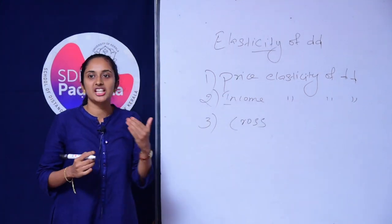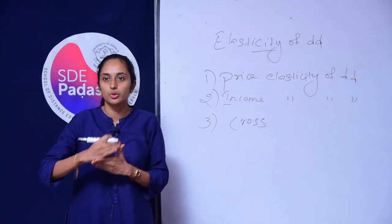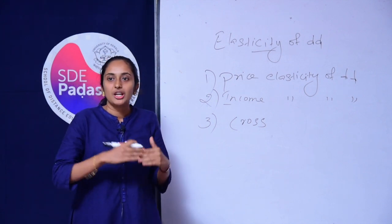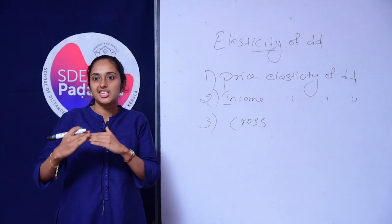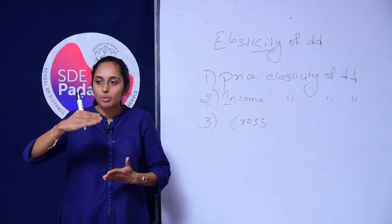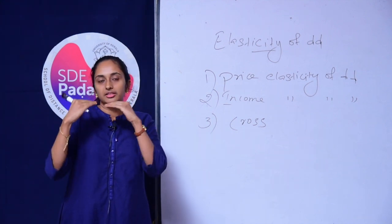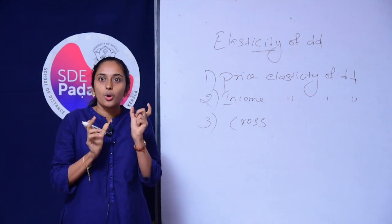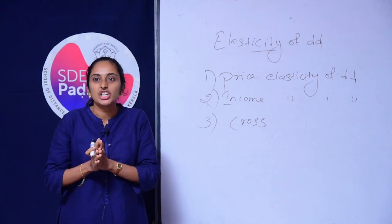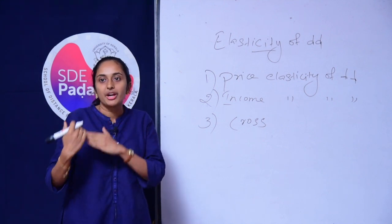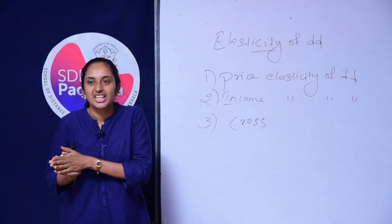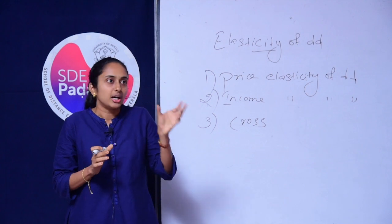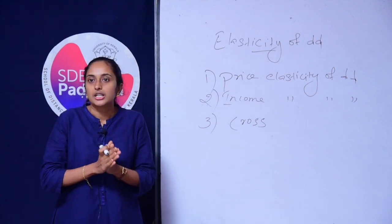Price Elasticity of Demand measures the responsiveness of quantity demanded of a good to a change in its price. We all know what is meant by the Law of Demand. The Law of Demand states that, other things remaining the same, when the price of a commodity falls, the quantity demanded rises and vice versa. This law only indicates the direction in which quantity demanded changes in relation to a change in price — it does not tell us by how much or to what extent the quantity demanded changes as a result of a change in price.